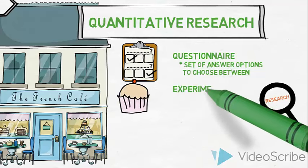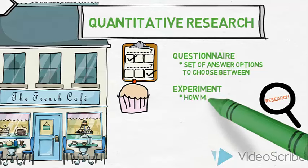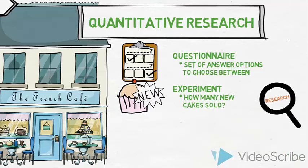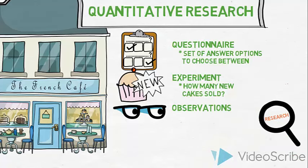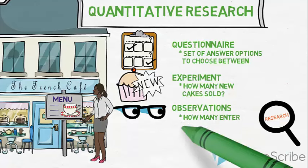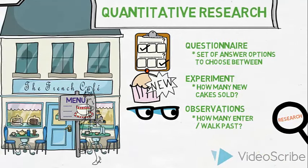They could also carry out an experiment where they test customers' reaction to the launch of a new cake and measure how many new cakes are sold. And they could carry out a structured observation, for example, counting how many customers stopped to look at the menu outside the café and how many of those choose to enter the café or to walk away.